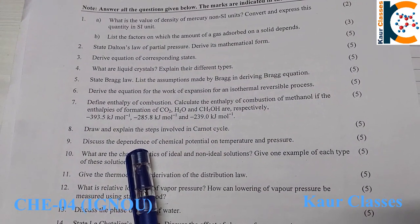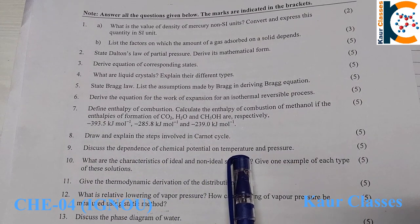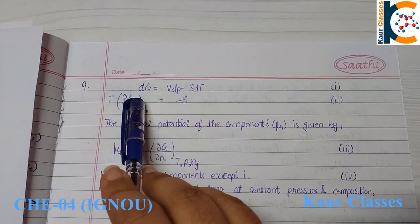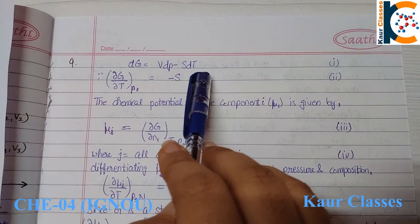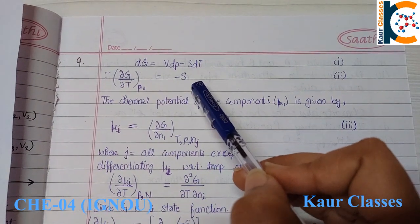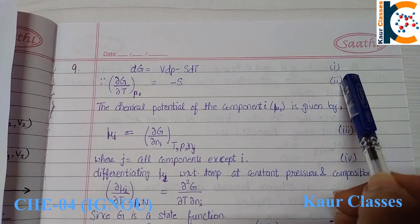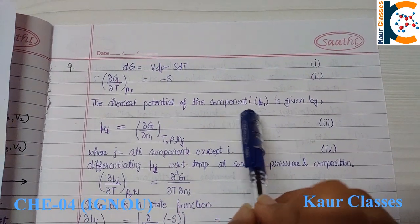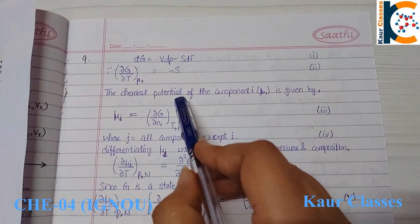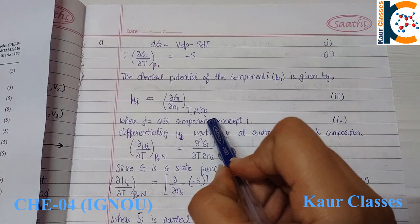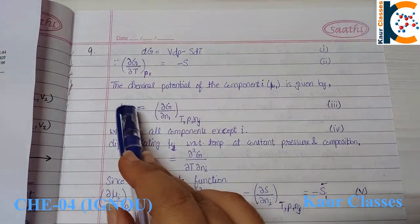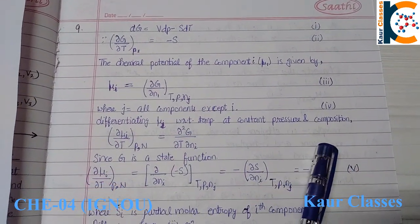Question 9: discuss the dependence of chemical potential on temperature and pressure. Starting with the Gibbs free energy equation: dG = V·dP − S·dT — this is equation one. By partial differentiation, entropy is obtained as equation two. The chemical potential of component i is given by μ_i = (∂G/∂n_i) at constant T, P, and n_j, where j represents all components except i.